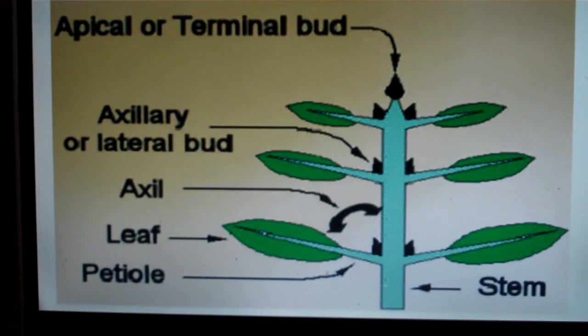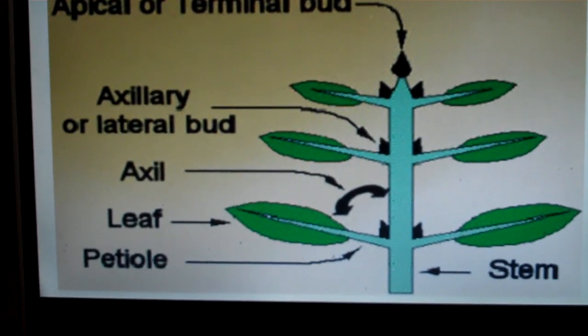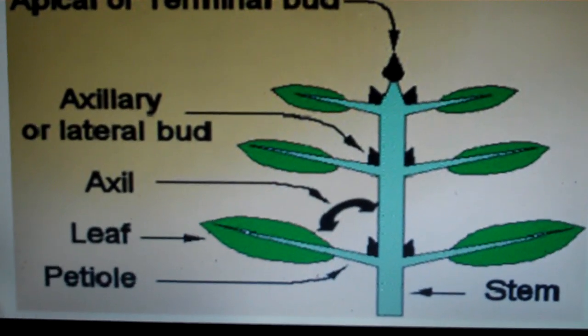The primary structure of shoots. A shoot consists of a stem, a petiole, and leaves.